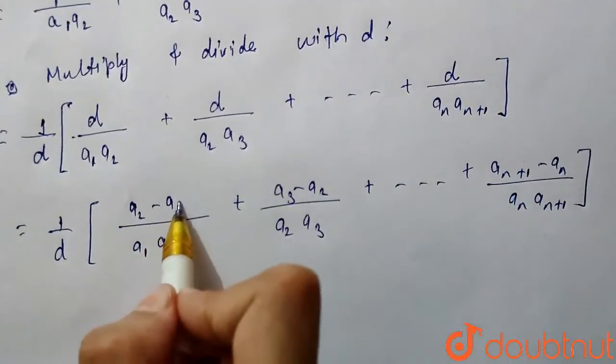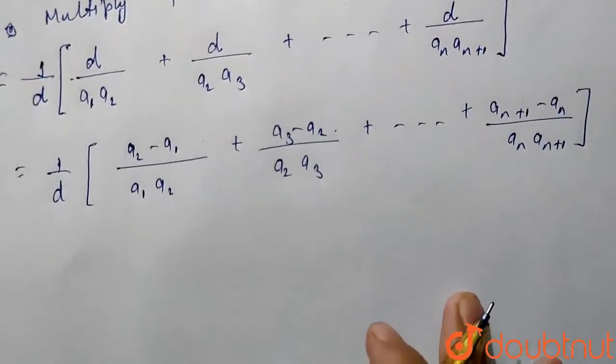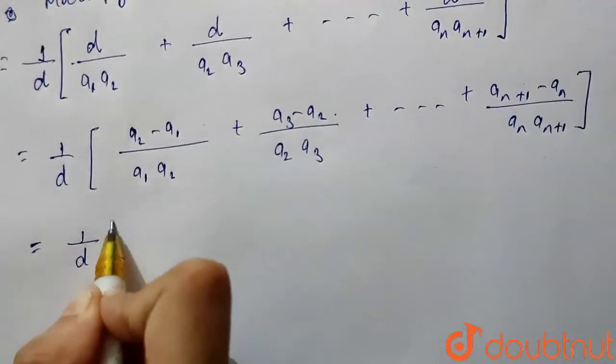So this will give the result d, this will also give the result d. Now, further simplifying, we will get 1 by d.